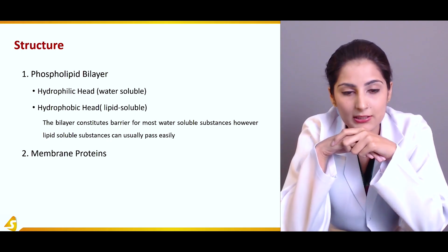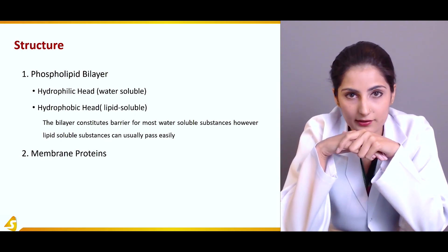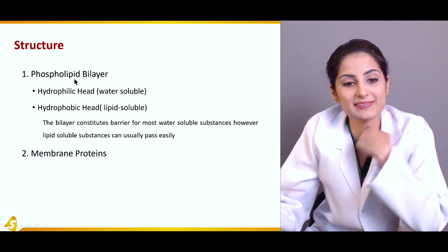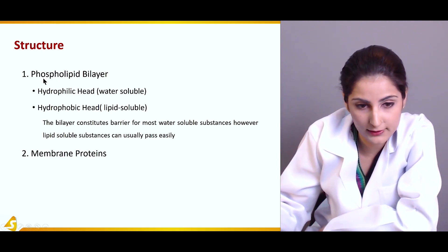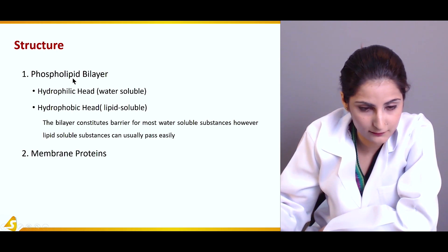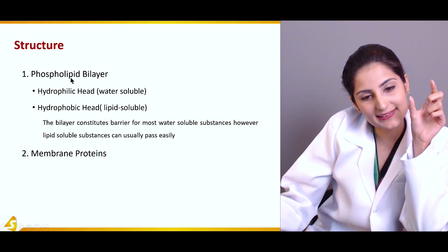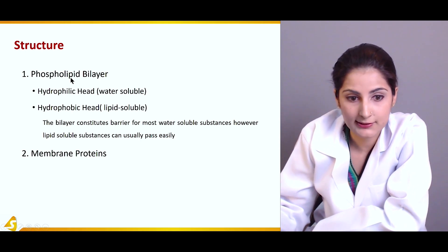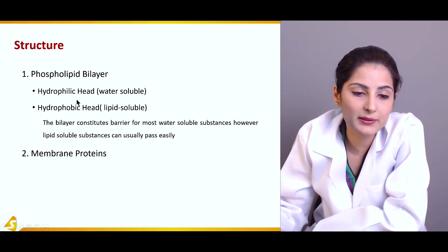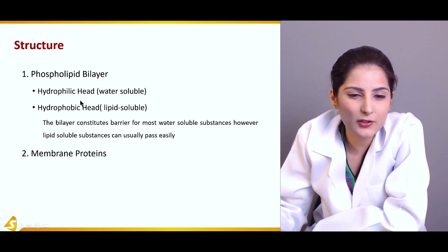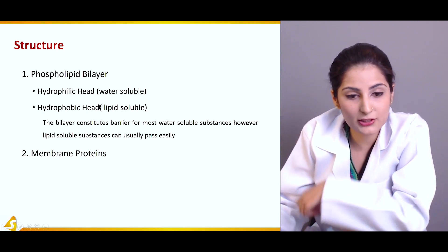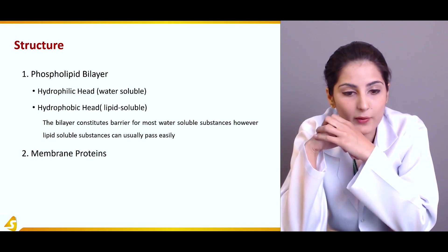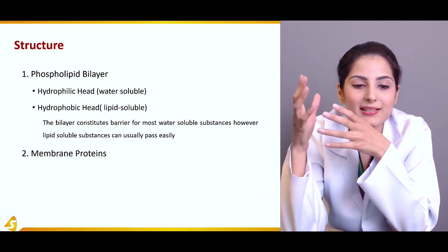The cell membrane, as we studied in the fluid mosaic model, is a lipid bilayer — bilayer means there are two layers. Phospholipid means phosphate molecule plus lipid, which forms the middle area of the cell membrane. The heads are hydrophilic, which means water soluble — they love water. The hydrophobic tails are not easily water soluble; they are lipid soluble. So the bilayer constitutes a barrier for most water-soluble substances; however, lipid-soluble substances can usually pass easily.